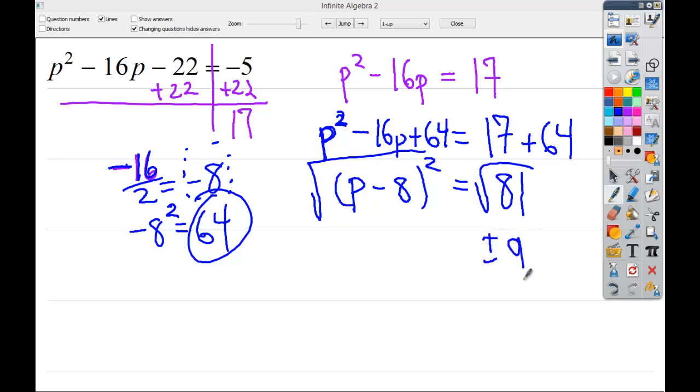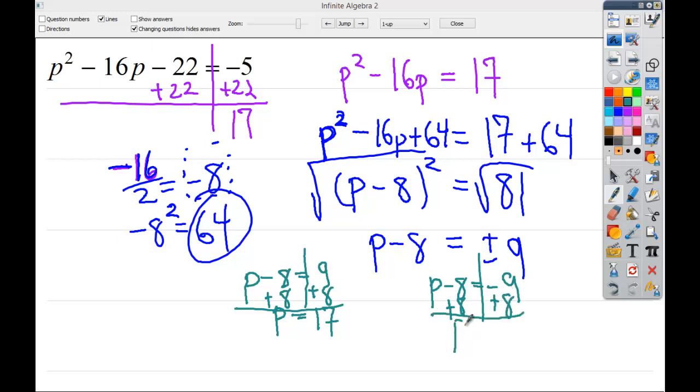Now from here, take the square root. This is plus or minus 9, and this becomes p minus 8. So I just need to solve my two little end game equations here. p is equal to 17, and on the other side, p is equal to negative 1. So I might use my little curvy brackets and say negative 1 and 17 is my answer. And I'll check it just to make sure. Yep, things are looking good. Those are my two solutions. So if I had to graph it, it would cross the x-axis at those points.